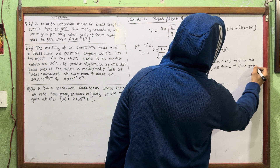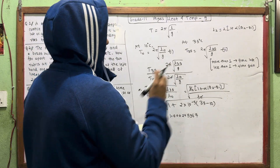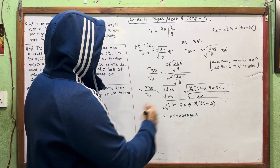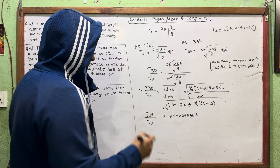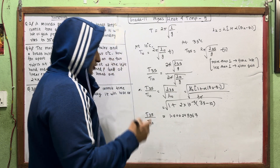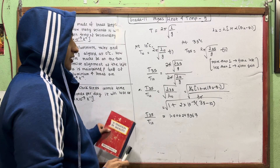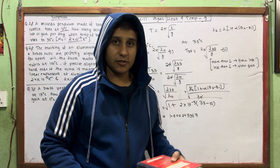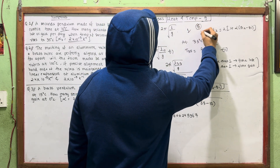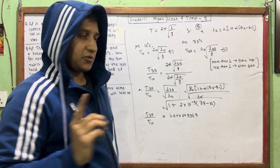So, time is lost. Time lost — common sense tells us that when temperature increases, the pendulum expands and loses time. The time lost per day is calculated from this ratio.